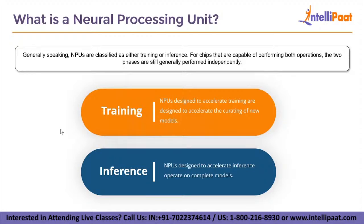Training chips are the NPUs designed to accelerate the curating of new models. This is a highly compute-intensive operation that involves inputting an existing dataset and iterating over it. It adjusts the model's weights and biases in order to ensure an ever more accurate model. Correcting a wrong prediction involves propagating back through the layers of the network. The process involves guessing again and again until an answer is achieved at the desired accuracy.